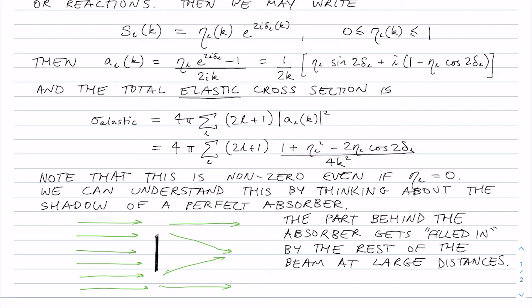And we can understand that because even in the case of the perfect absorber, you're still going to have some kind of diffraction around the sides of the absorber at infinite distances. And so this is a way of understanding scattering, elastic scattering, from a perfectly absorbent potential.